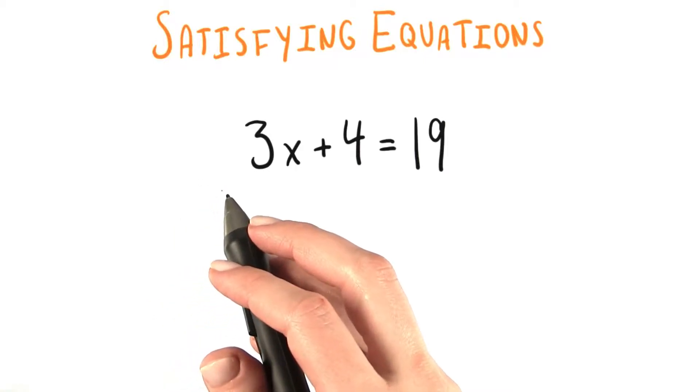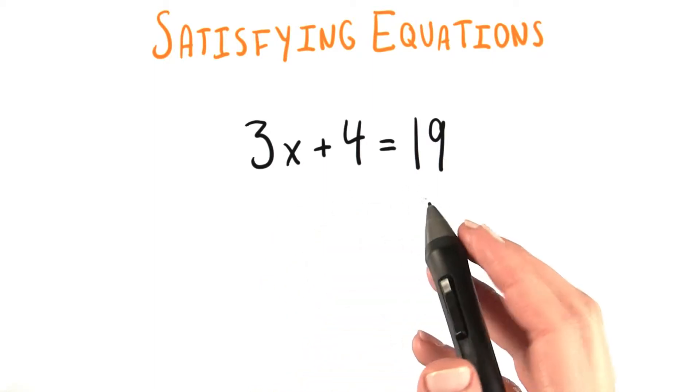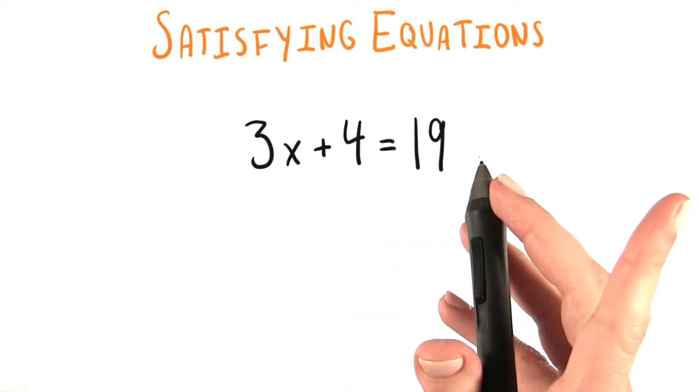Earlier on, we looked at solving equations which looked something like this. Here we have 3x plus 4 equals 19. Let's consider something slightly different however.